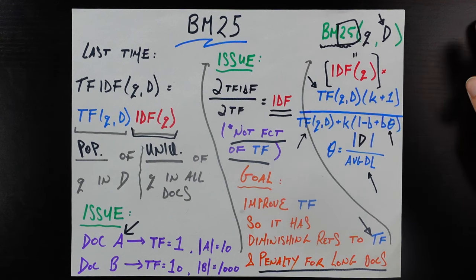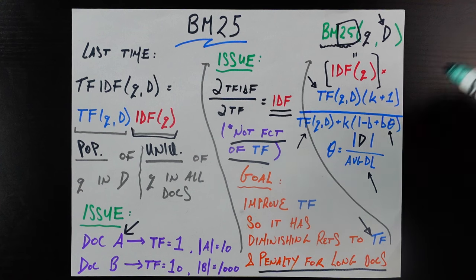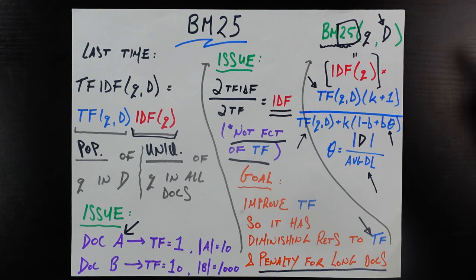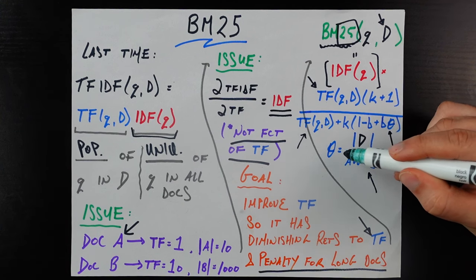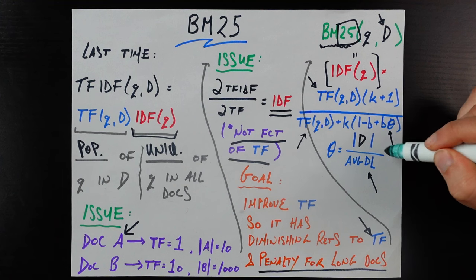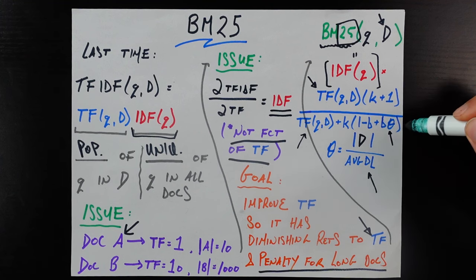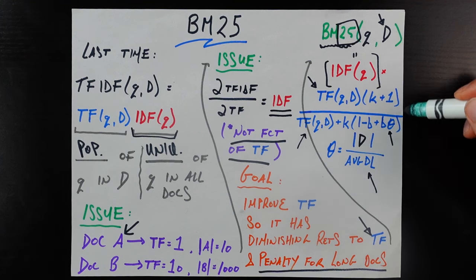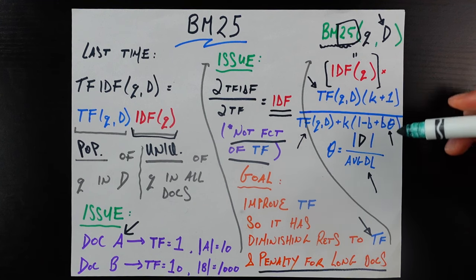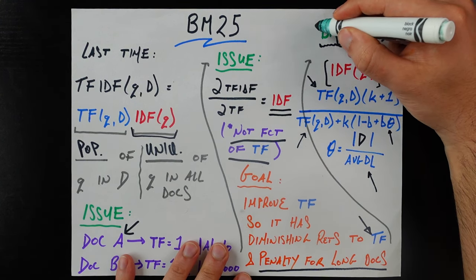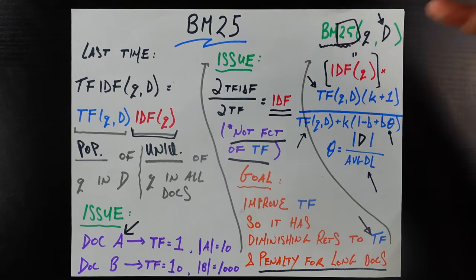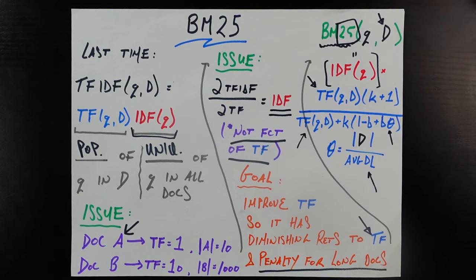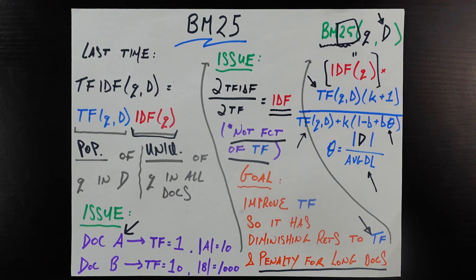You can already see why this is a penalty. k and b are positive numbers, and because theta appears in the denominator, the bigger theta gets — meaning the longer this document is relative to all others in the corpus — the bigger the denominator becomes, and therefore the entire fraction gets smaller. Since this fraction is BM25, we have an inverse relationship between increasing document lengths and the overall score, everything else held constant.